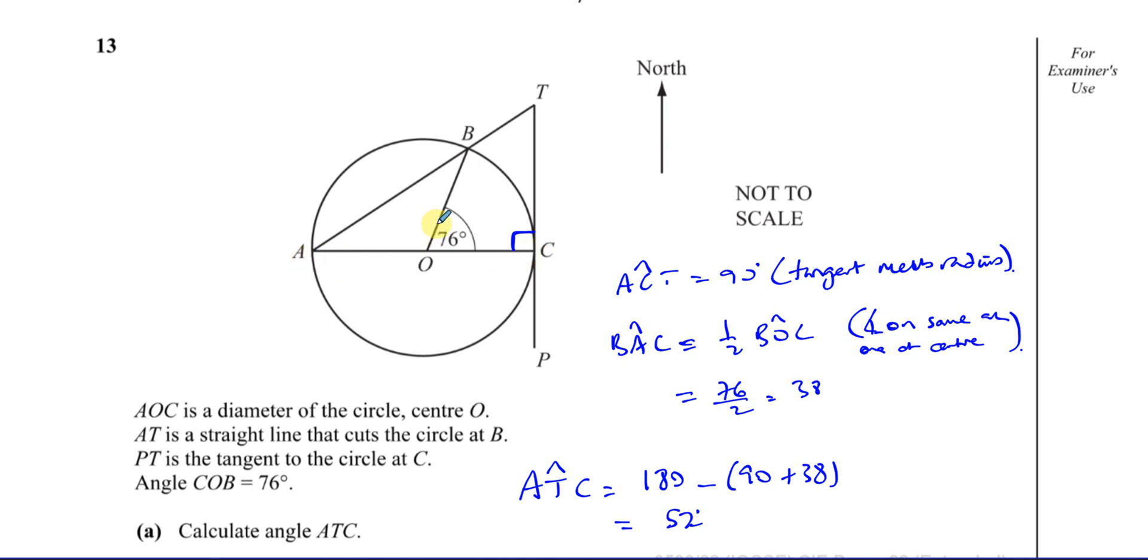This is a straight line, so I can work out what this angle is. This is 180 minus 76, which is 104. And because this is an isosceles triangle, because this is the radius OA, OB, OC, they're all radii. So these are all equal lengths. So this is an isosceles triangle. So this angle, you can say OAB, the angle OAB is equal to 180 minus 104 divided by 2. Why? Because it's an isosceles triangle.